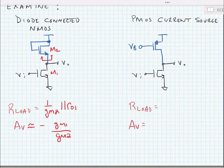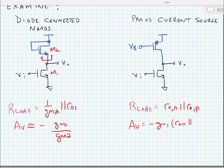Now if I instead look at the PMOS current source, the load is ro in parallel with rop. In other words, the output resistance of the PMOS transistor in parallel with the output resistance of the NMOS transistor, and then my voltage gain is minus gm1 times ro in parallel with rop.